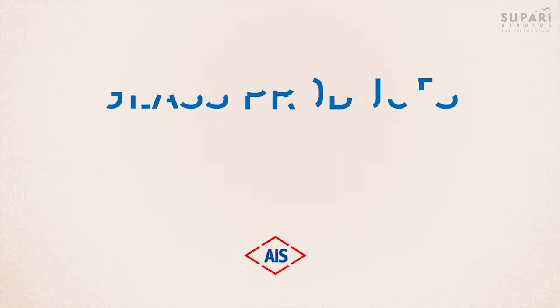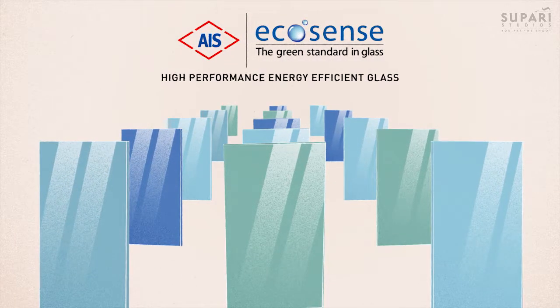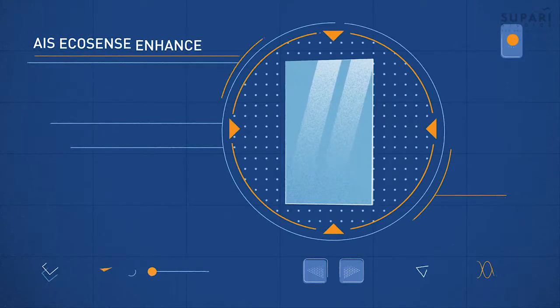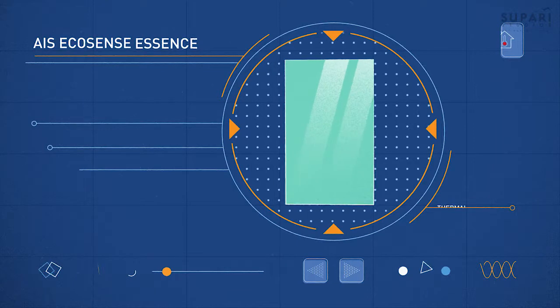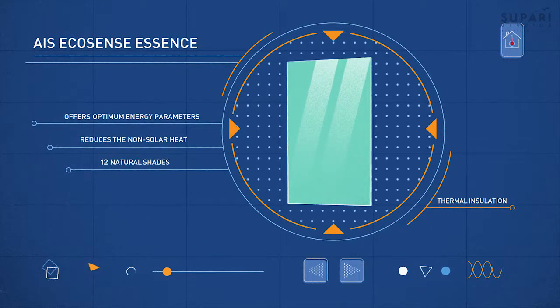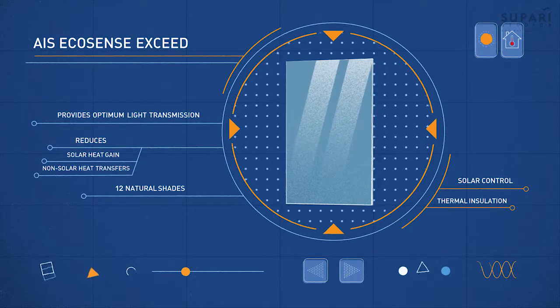Glass products. We offer a wide variety of products in the EcoSense range of soft-coated glasses that include EcoSense Enhance for solar control, EcoSense Essence for thermal insulation, and EcoSense Exceed for solar control and thermal insulation.